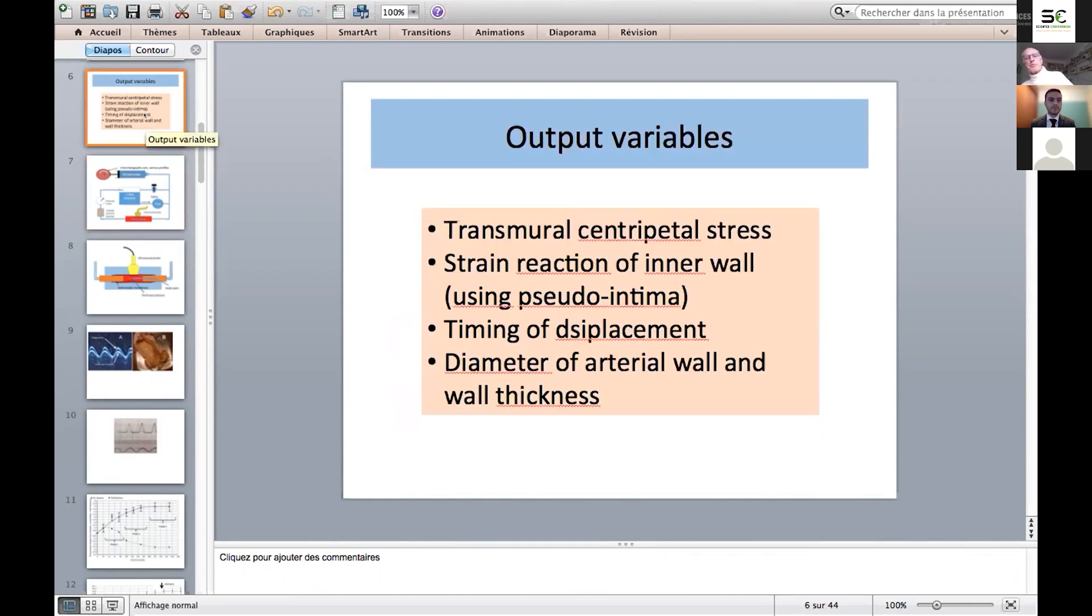The profile of that cam can be changed to change the nature of the pulse pressure wave. And the output variables, the things we can measure, are the centripetal stress across the inner surface of the arterial wall, the strain reaction of the inner wall using a deformable latex pseudo-intima, and the timing of the displacement and the diameter of the arterial wall in its response to changes in arterial pressure.